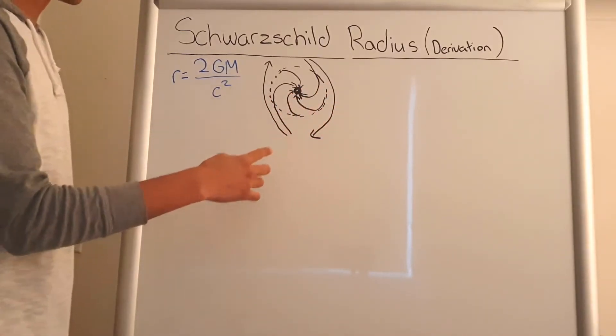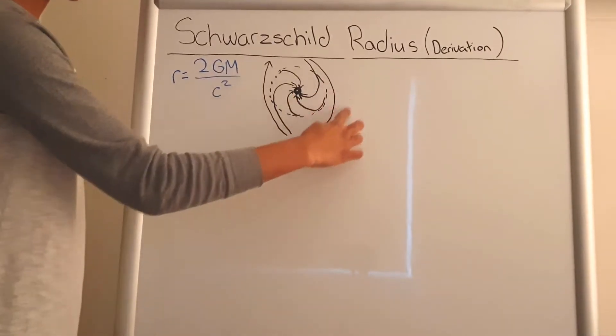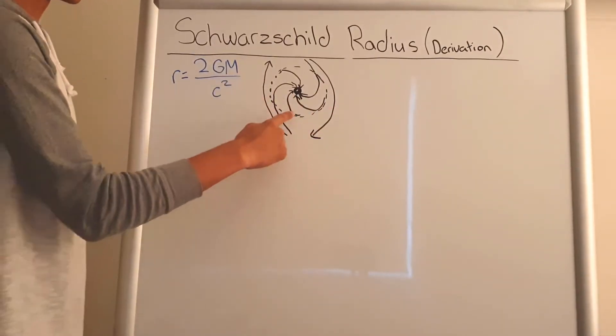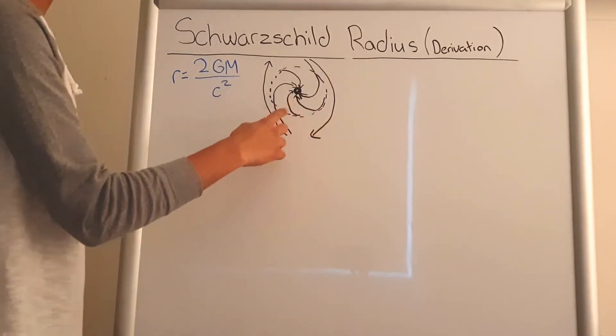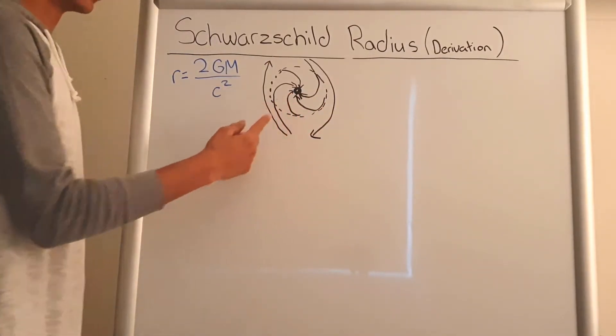So these rays outside this circle are being curved by the singularity but are not being attracted into it.